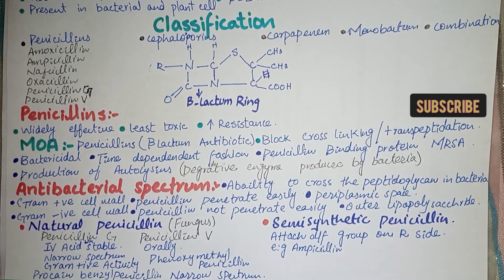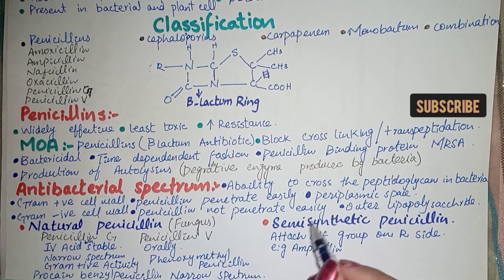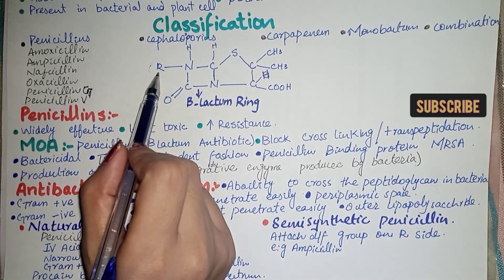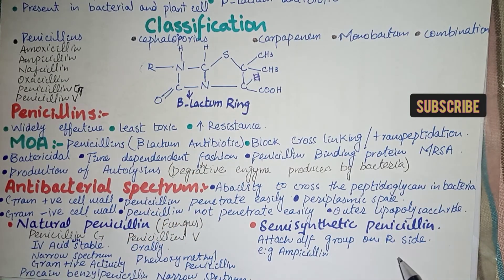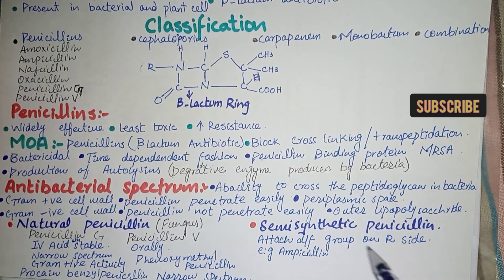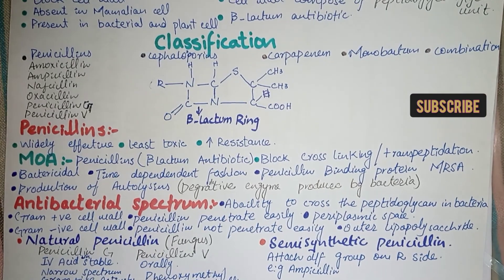Semi-synthetic penicillins are made by attaching different R groups to the R side chain of the basic penicillin structure. By modifying this structure with a different group, the resulting compound becomes semi-synthetic. An example of a semi-synthetic penicillin is ampicillin.